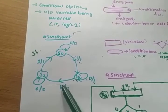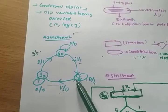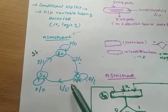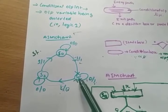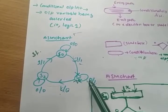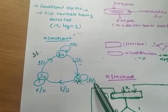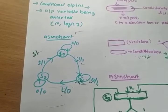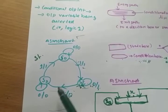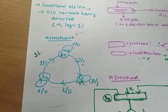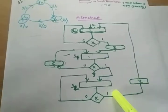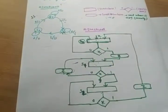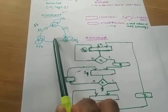In state S2, if input 1 is given, it goes to S1 with output 0. In state S1, if input 0 is given, it stays in S1 with output 1. Now we need to draw the ASM chart for this state diagram.